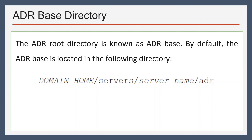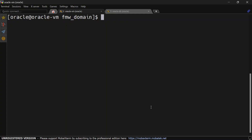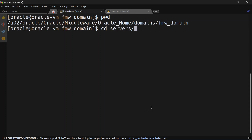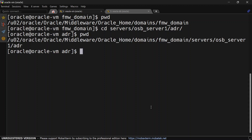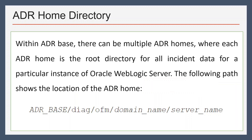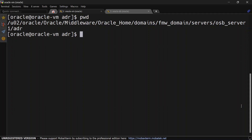Let's see what the ADR file hierarchy is, and what ADR base and ADR home are. The ADR root directory is also known as ADR base. Let's try to locate that in our server. We are in our domain home and we'll go to servers, then to the server folder. Inside that we have ADR. This is our ADR root directory, which we also call ADR base. Within ADR base we have ADR home. ADR base is a root directory for ADR and we can have multiple ADR homes inside it, such as admin server or managed server instances.